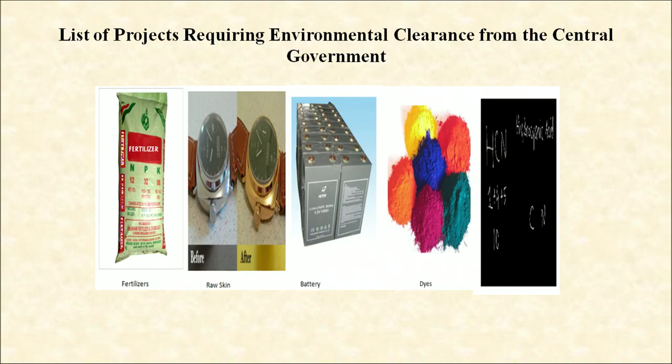Other categories include bulk drugs and pharmaceuticals, exploration for oil and gas, synthetic rubber, asbestos and asbestos products, hydrocyanic acid and its derivatives, primary metallurgical industries of iron and steel, aluminium, copper, zinc, lead and ferroalloys, and chloralkali industries. Further industries include integrated paint, viscose staple fiber and filament yarn, storage batteries, all tourism projects, thermal power plants, mining projects and highway projects which pass through ecologically sensitive areas such as national parks, sanctuaries, tiger reserves and reserve forests.